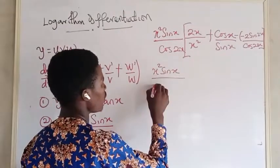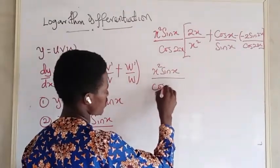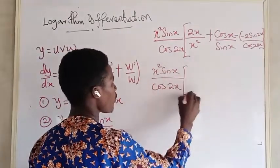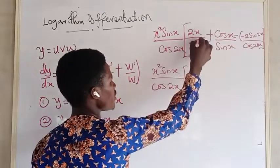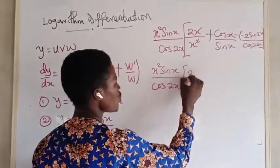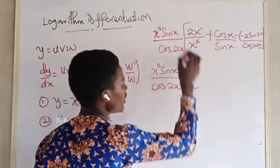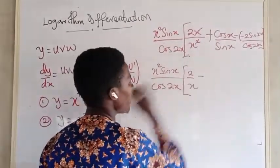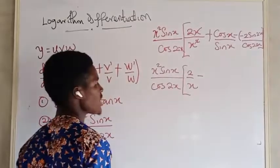So the final expression is x² · sin(x) over cos(2x), times the open bracket: 2 over x, plus cos(x) over sin(x), minus 2 sin(2x) over cos(2x).